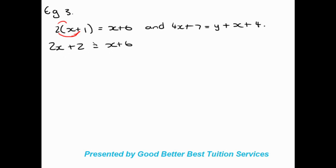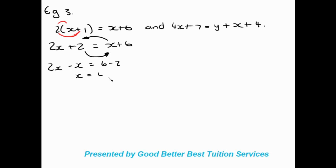We bring X to the left side and numbers to the right side — signs change when they cross over, both were positive so both become negative. So 2X minus X equals 6 minus 2, giving X equals 4. We can say X equals 4 is equation number 1.